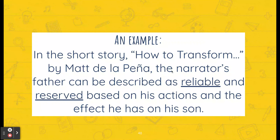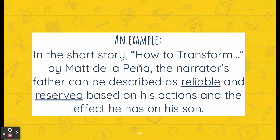We don't have this person's name — there are no names in that story, which is kind of a unique thing. But you would say: 'In Sometimes a Dream Needs a Push by Walter Dean Myers, Chris can be described as blank and blank based on...' and then go through that STEAL list — speech, thoughts, effect, actions, and looks.